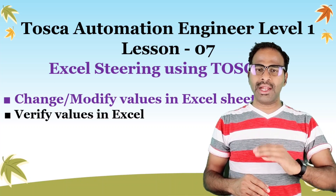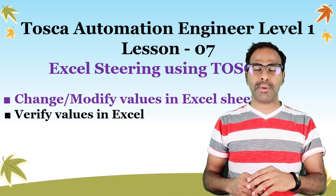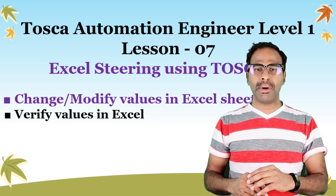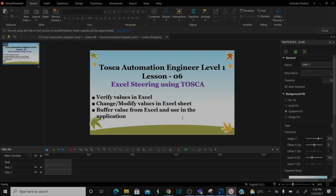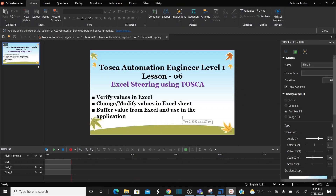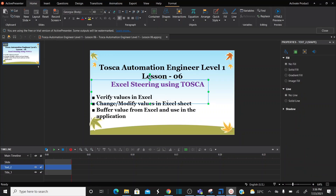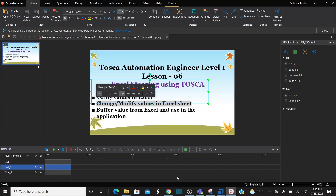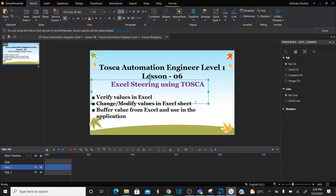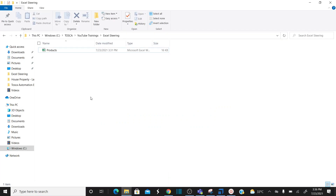So that is our agenda item. Our second agenda item is to change and modify values in an Excel sheet — how can we change or modify values that are stored in your Excel sheet. If you are using test data in an Excel sheet, you can change or modify it, or if you want to publish results, you can change or modify your results in the Excel sheet. Let me show you the Excel sheet I'm going to work on.